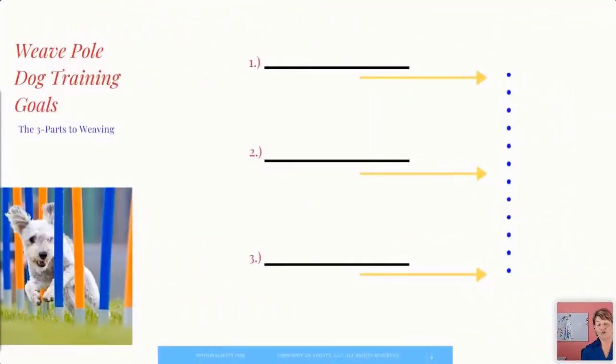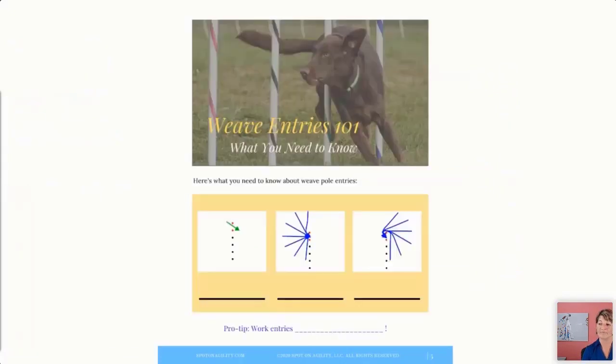Alright. Next, weave pole training goals. When I'm looking at the weave pole obstacle, I tend to divide this into three sections. There is the entry part of the weave poles. There's the middle part of the weave poles where the dog is actually doing the weaving action itself. And then there's the exit or the last part of the weave poles. I'm going to go through all three of those. And we're going to talk about why all three are very important when choosing a weave pole method to use for training.